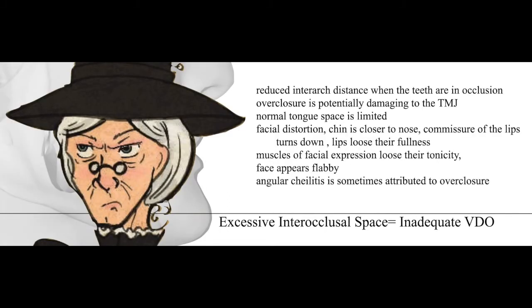On the other hand, when you have excessive inter-occlusal space — inadequate vertical dimension of occlusion — giving reduced inter-occlusal distance when teeth are in occlusion, the consequences are: over-closure potentially damaging to the TMJ, limited normal tongue space, facial distortion where the chin gets closer to the nose, commissures of the lips turn down, lips lose their fullness, facial muscles lose their tonicity and appear flabby, and angular cheilitis is sometimes attributed to over-closure.